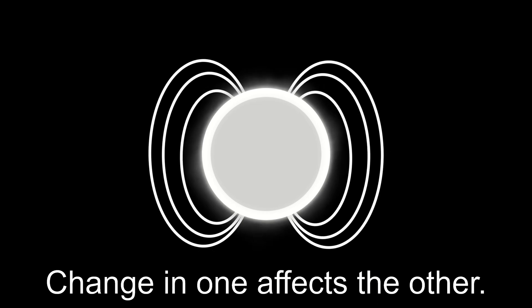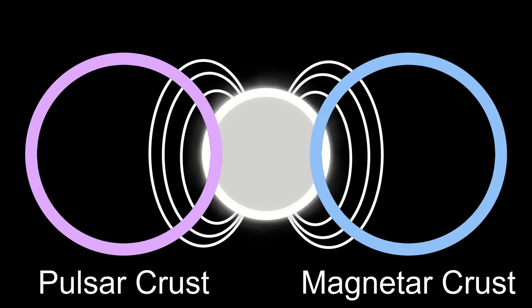Every neutron star's crust, or outer layer, is very unstable due to the immense gravitational pressure and any movement within it may be explosive. Their magnetic field and crust are linked together, so if one is affected, the other is too. Now let's compare what will happen if there's an explosion on a pulsar's crust versus a magnetar's crust.